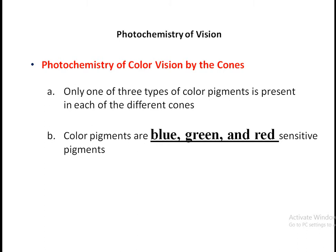Only one of three types of color pigment is present in each of the different cones. To have color vision, which is the main function of the cone, there are basically three types of cones — or three basic colors: blue, green, and red. From these three basic colors you can have hundreds of thousands of combinations — different shades and different colors.